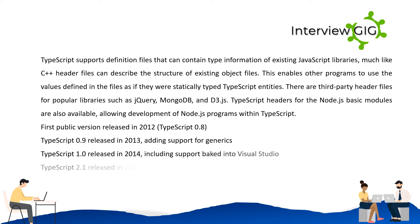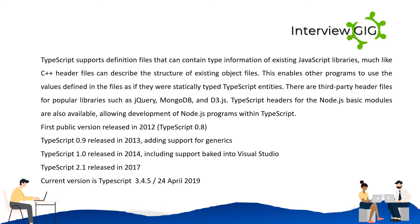TypeScript 0.8 was the first public version, released in 2012. TypeScript 0.9 was released in 2013, adding support for generics. TypeScript 1.0 was released in 2014, including support baked into Visual Studio. TypeScript 2.1 was released in 2017. The current version is TypeScript 3.4.5, released April 24, 2019.